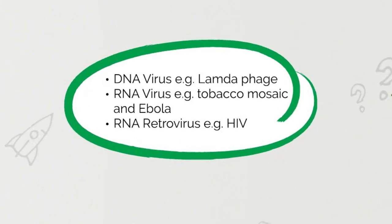There are three types of viruses and you need to know examples of each. The first type is a DNA virus, which features DNA as its nucleic acid — the example you need to know is the lambda phage virus. The other two are types of RNA viruses: a normal RNA virus, where the example is either Ebola or tobacco mosaic virus, and RNA retroviruses, where the example you need to know is HIV.